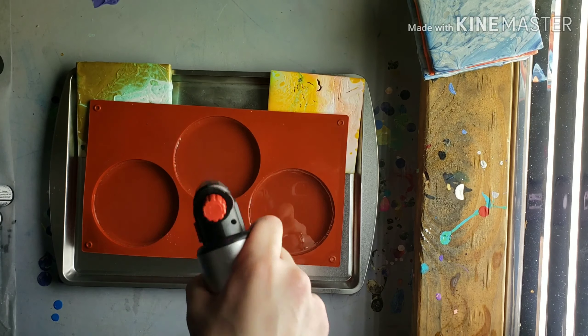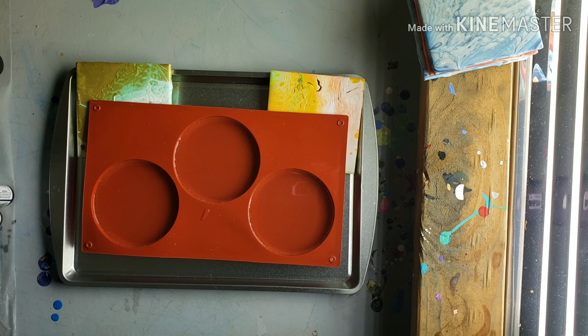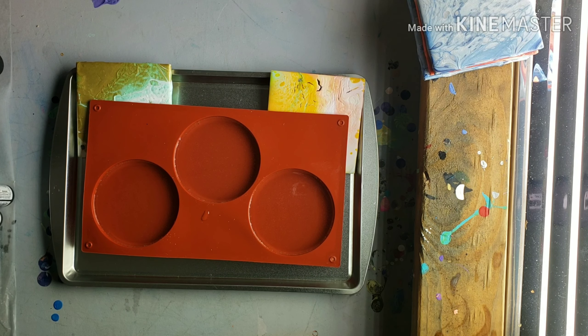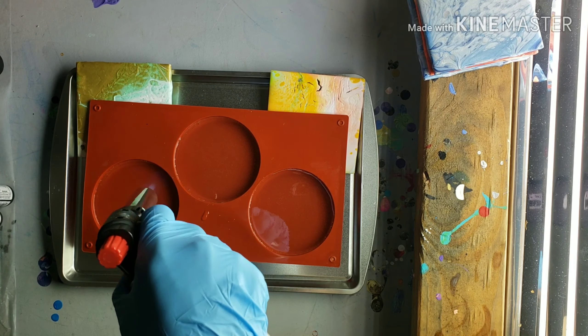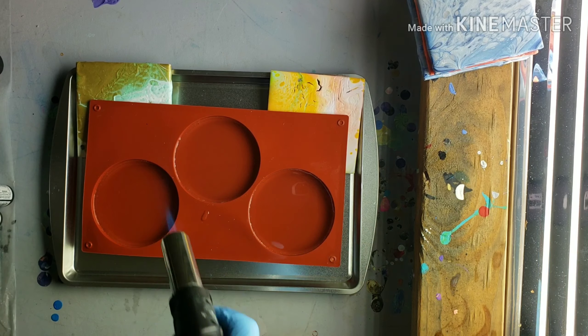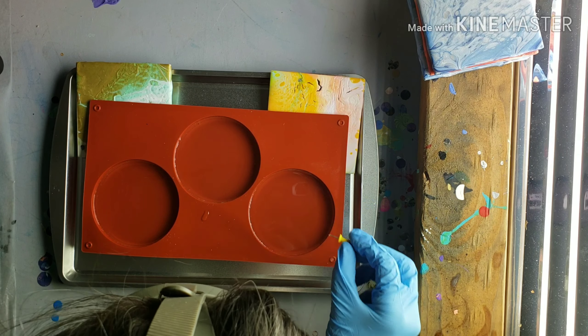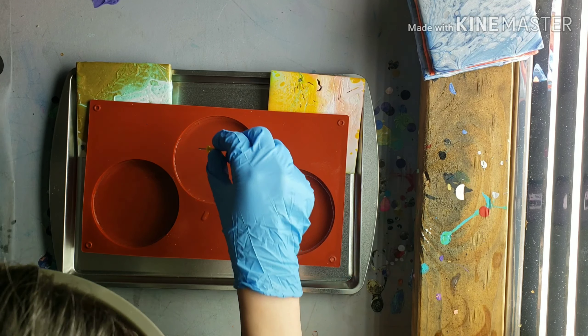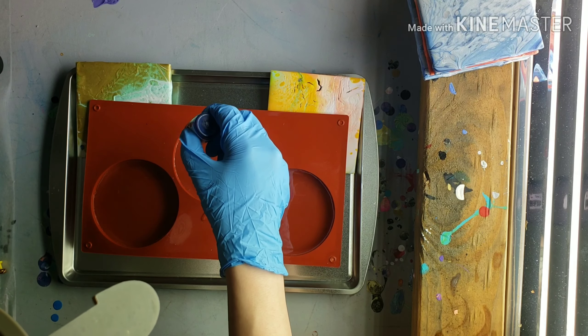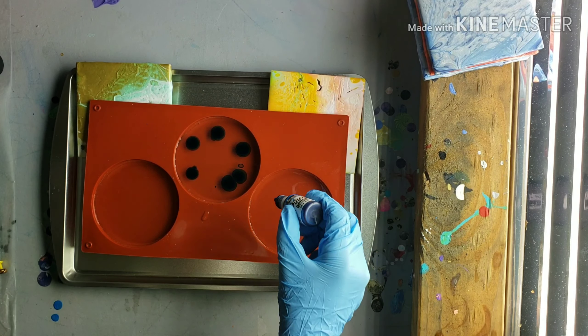These ones I actually let the resin sit in the mold for like 15 minutes before I hit it with my little torch to pop all the bubbles. Before you use your torch, make sure you turn it on and point it away from your project for about 5-10 seconds to blow out any of the dust boogers. Thanks to Doris at DF Designs for that tip. Now I'm taking a little pushpin tack and I'm popping any bubbles that are along the edge of the mold.